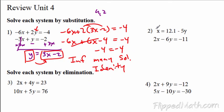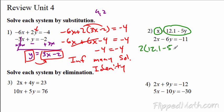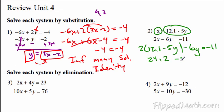Let's look at number two. X is already solved for, so that's obviously what we want to substitute in. We're going to have 2 times (12.1 minus 5y), and all of that subtracts 6y, equaling negative 11. So we get 24.2 minus 10y minus 6y equals negative 11. That's set up — you can solve the rest of it. Check the review for all the work.